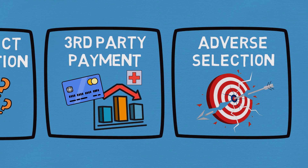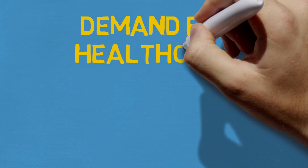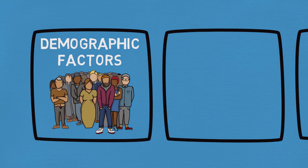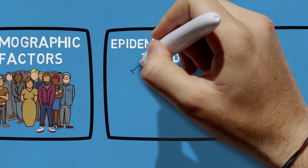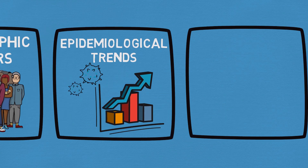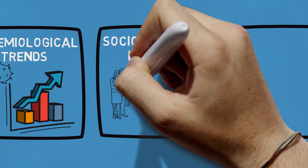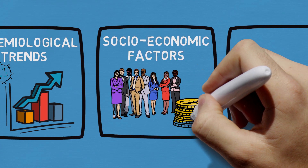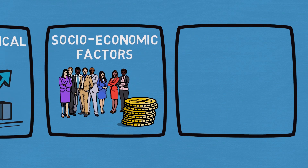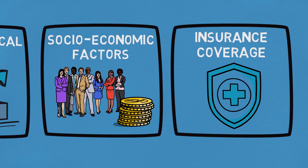Regardless of whether healthcare is privately or state-provided, there are factors that impact the overall supply and demand. On the demand side: demographic factors like an aging population and population growth increase demand. Epidemiological trends like rising chronic diseases — diabetes, heart disease — and pandemics like COVID-19 create sudden demand spikes. Socioeconomic influences such as income levels and healthcare literacy affect usage. Cultural and behavioral attitudes also matter, as do insurance coverage and out-of-pocket costs — high costs deter care, while services free at point of use tend to increase demand.